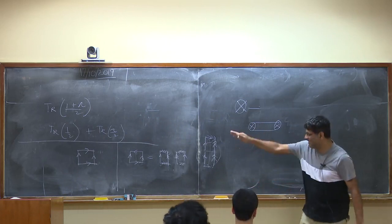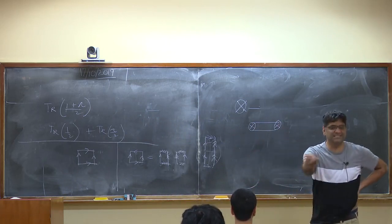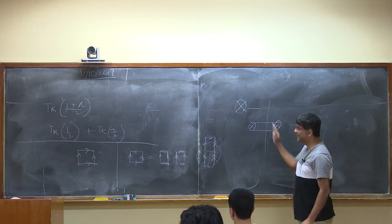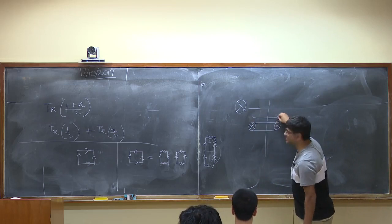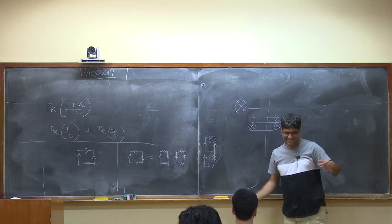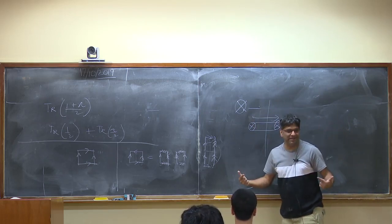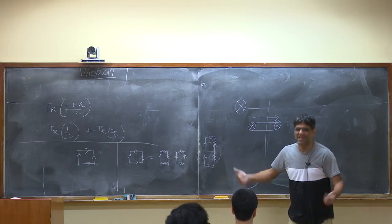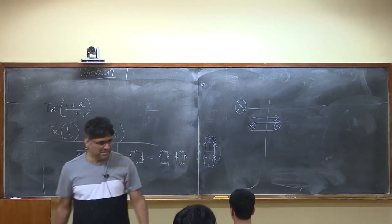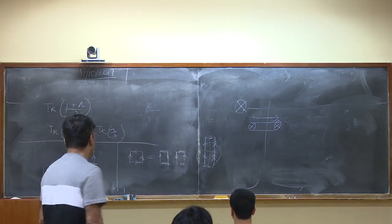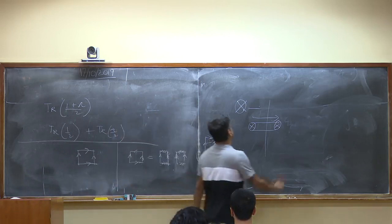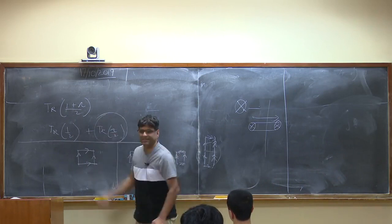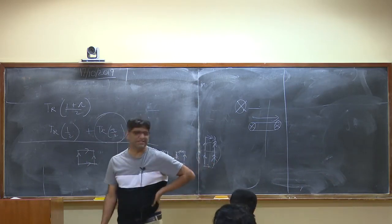This representation will be useful: once we do our calculation we're going to cut the Klein bottle like this and see stuff running between the two cross caps — very much like what we did for open strings. Let's now get to the calculation: we need to compute this object for the bosonic string.